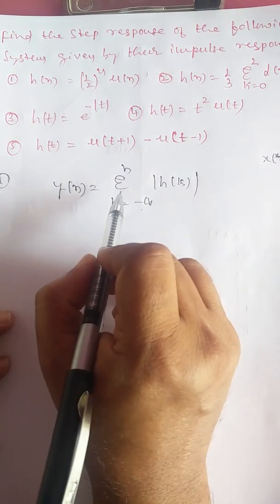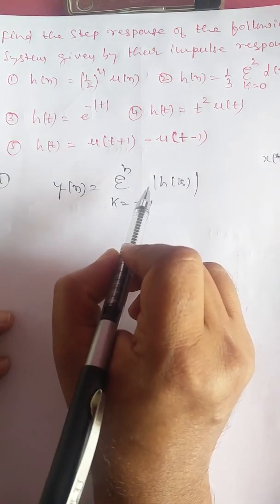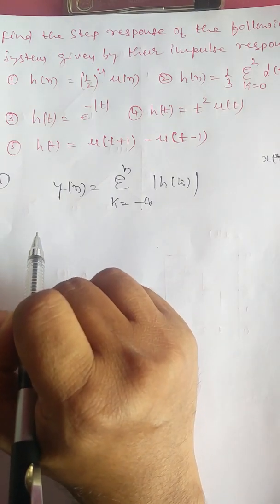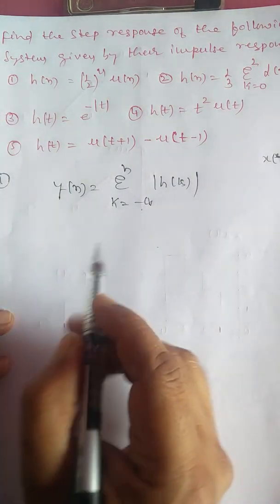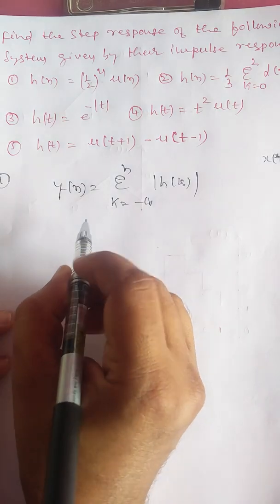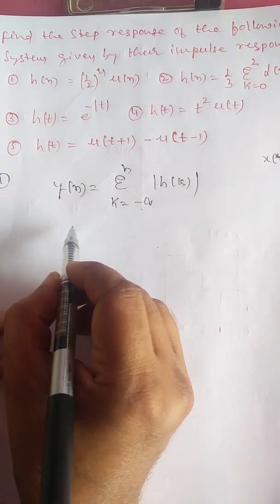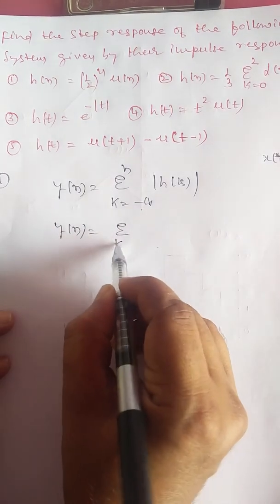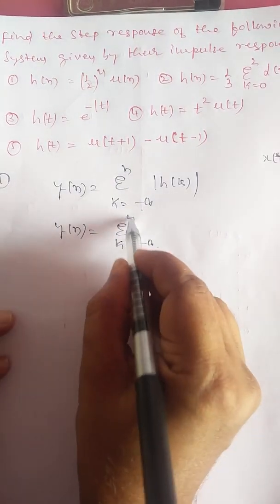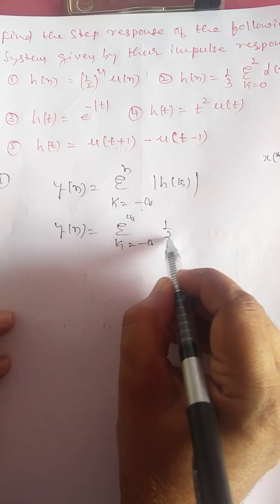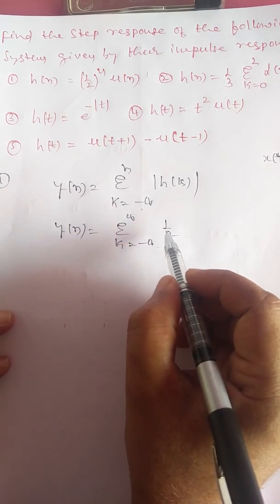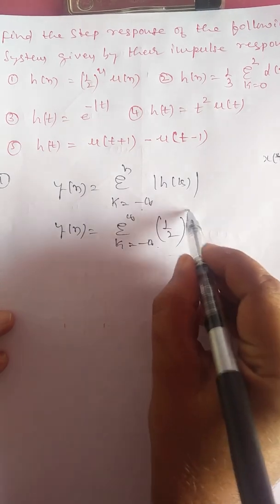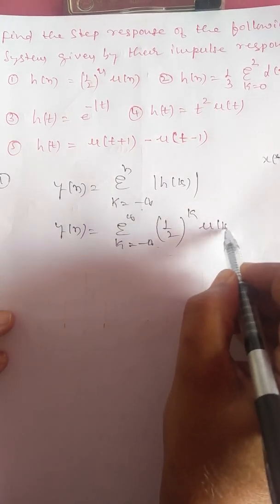This is the derived equation when the input signal is u[n], that is the step response. Here h[k] = (1/2)^k · u[k], so y[n] = summation of k from minus infinity to plus infinity of (1/2)^k · u[k].